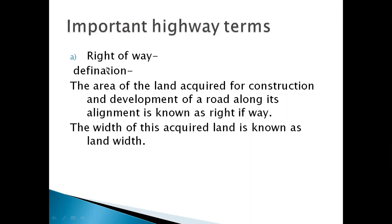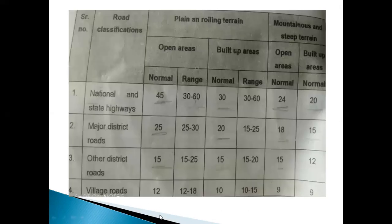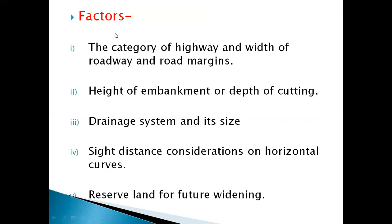Now we can revise the important highway terms. First is right-of-way — the actual area required for the construction and development of roads along its alignment. We saw the right-of-way distances in the table. The factors considered while designing the right-of-way distance are: category of highway and width of roadway and road margins, height of embankment or depth of cutting, drainage system and its size, and sight distance consideration on horizontal curves.